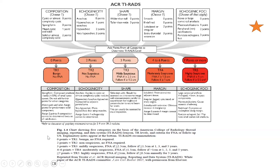Seven points or more is TR5, highly suspicious: FNA needed if greater than or equal to 1 cm, and follow-up required between 0.5 cm up to 1 cm. We must carefully consider all parameters including composition, echogenicity, shape, margin, and echogenic profile. Many questions — two or three — are asked from this TIRADS classification every exam. Importantly, TR3 mildly suspicious requires FNA if more than or equal to 2.5 cm, with follow-up if more than or equal to 1.5 cm at 1, 3, and 5 years — this has been asked in previous exams.